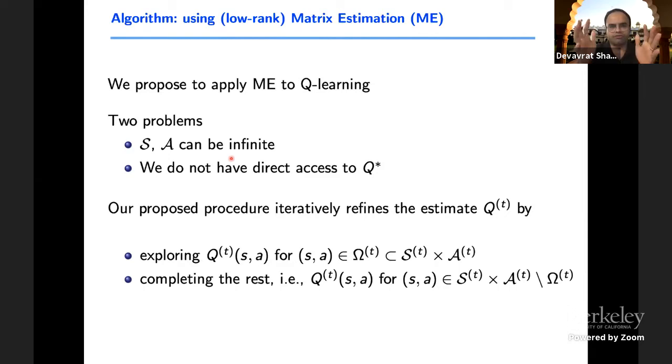If you look at a matrix with rows being the finitely many sampled states and columns being finitely many sampled actions, and Q star of S comma A being the entry of that matrix, because the Q star is finite rank in the way we defined, the sampled version or sampled matrix has a finite rank, in particular rank no more than R in the traditional matrix sense. So if you have finite rank, and if you know exact value for roughly R times the maximum of the dimension of the matrix, then the traditional matrix estimation literature would suggest that we should be able to recover all the entries pretty accurately.